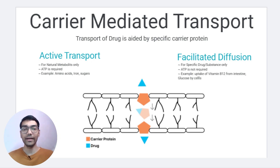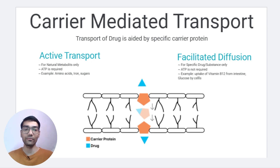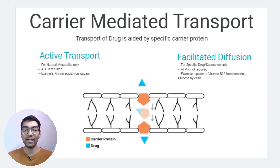Since this movement is going against the concentration gradient, there is an expense of energy by the cell. The energy currency of the cell is ATP, so the cell needs to spend some amount of ATP to carry out this transport. In the human body, natural metabolites such as sugars, amino acids, and ions use active transport.